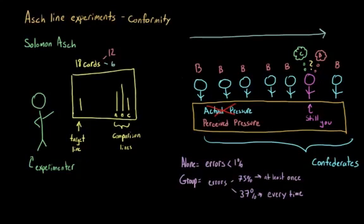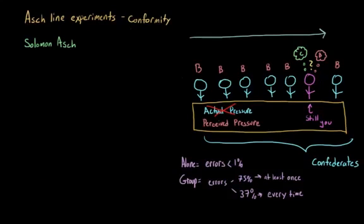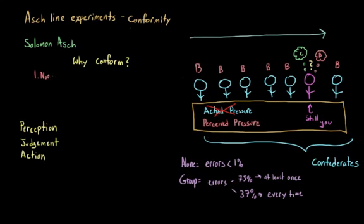So why would the participants of this study go against their better judgment and conform with the group? When they were interviewed following the experiment, when they were asked why they had conformed, most participants noted that the answers that they had given were incorrect. But they went along with them because they feared being ridiculed by the group. And we would refer to this as normative social influence, which is altering our behavior so that we better fit in with those around us. So they saw what the correct answer was, they knew that it was the correct answer, but they went against it regardless.